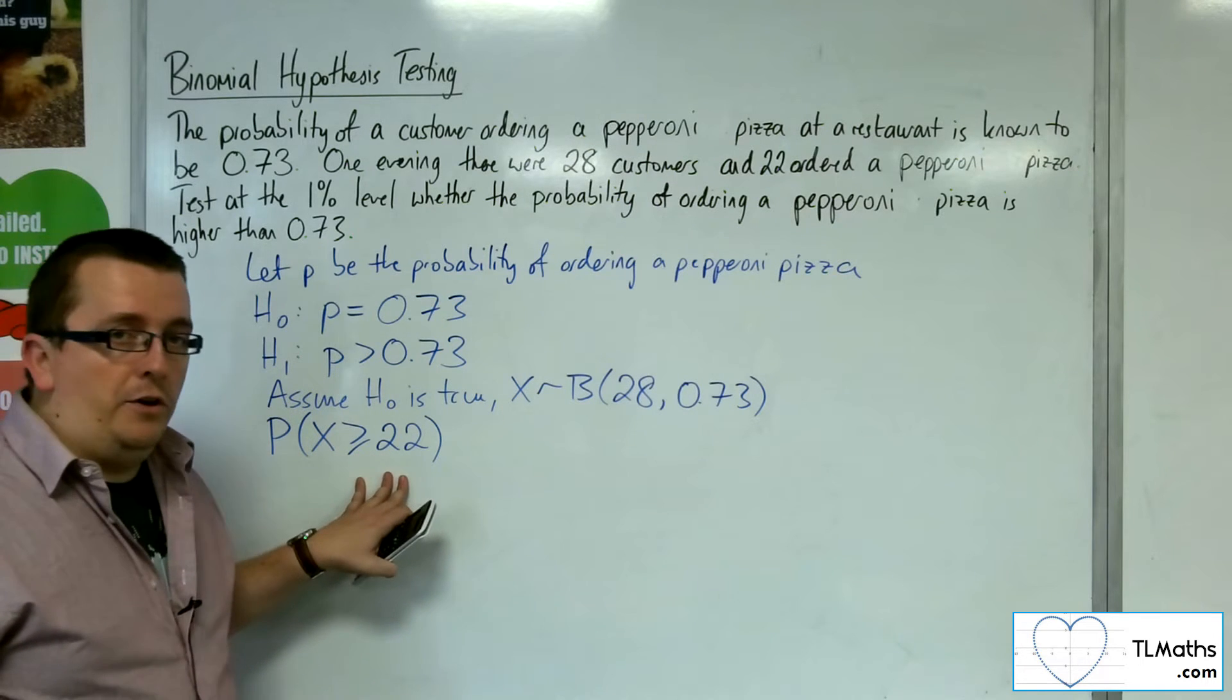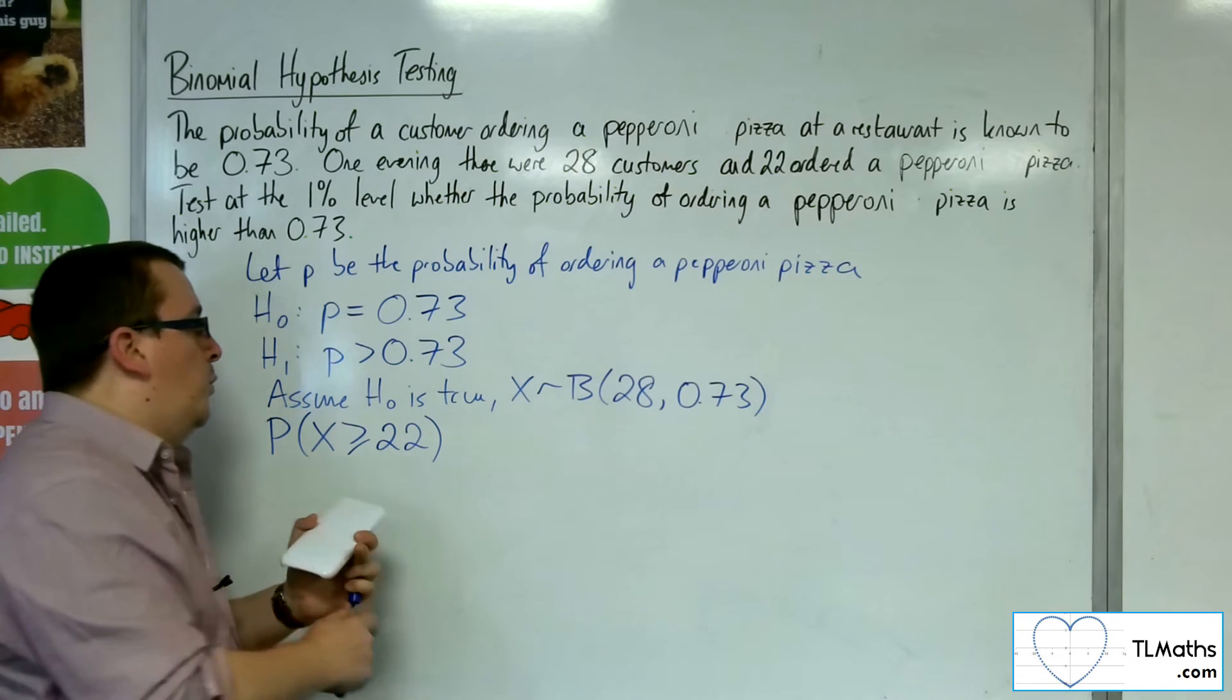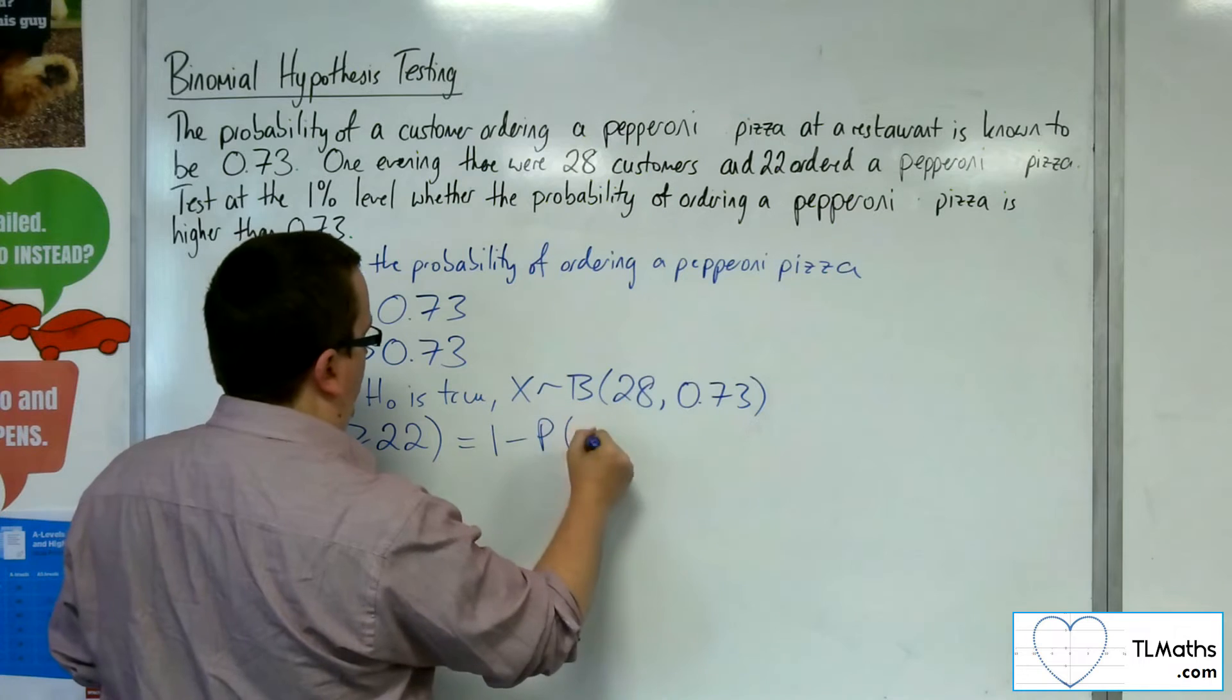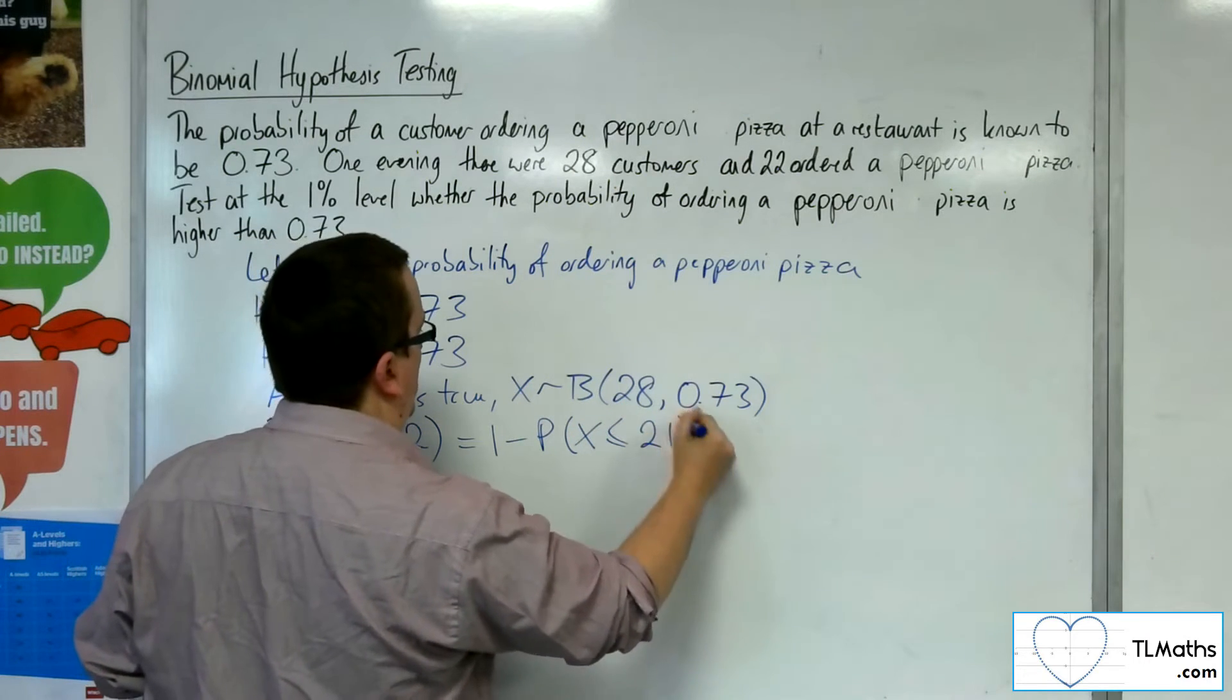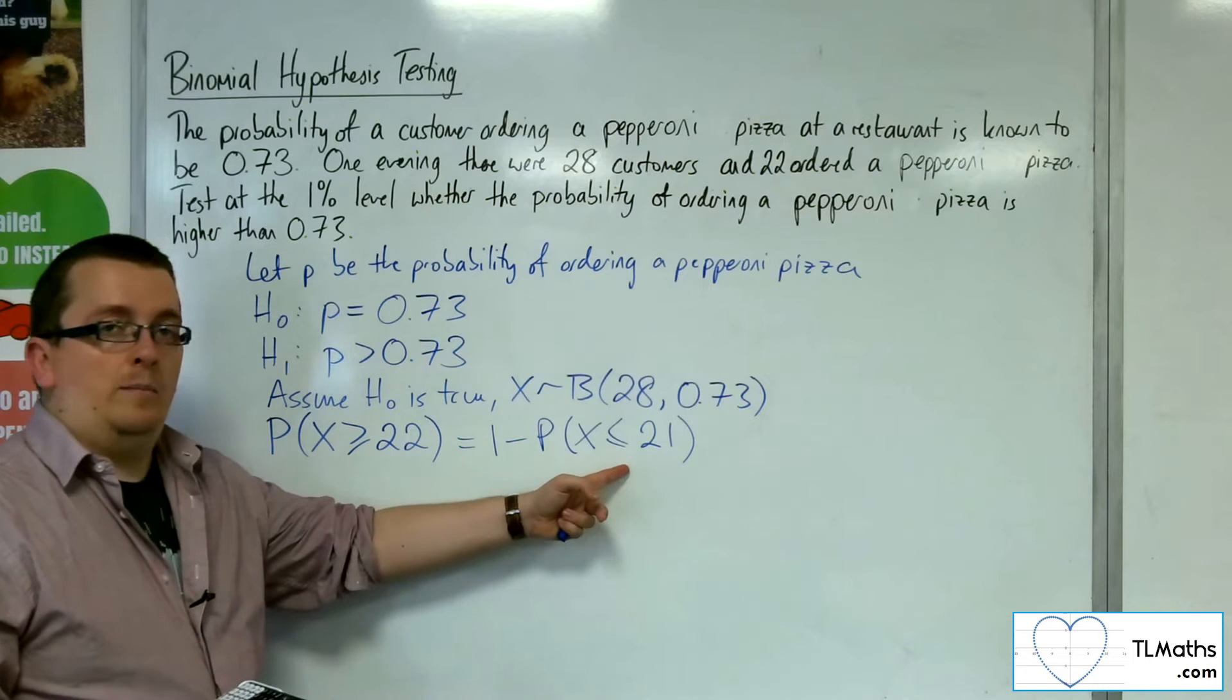Our calculators can't look up greater than or equal to, so we've got to do 1 - P(X ≤ 21), because our calculators can look up less than or equal to.